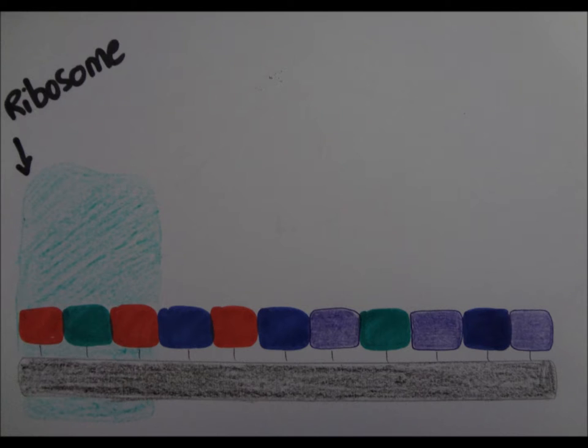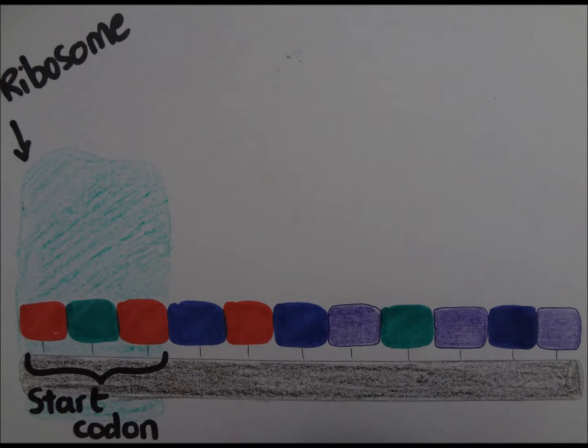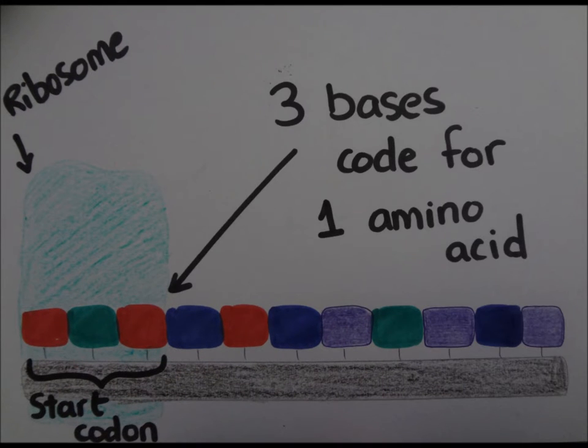Translation. The ribosome binds to a start codon, which consists of three bases that code for an amino acid.